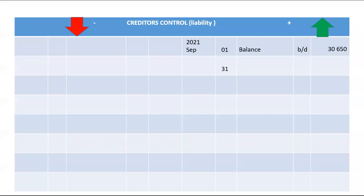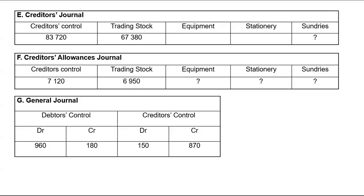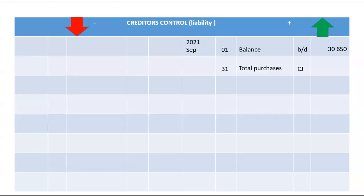This will be total purchases found in your creditors journal, specifically the total of your creditors control column. The total of our creditors control in the creditors journal is 83,720, and that will increase our creditors control account on the credit side.